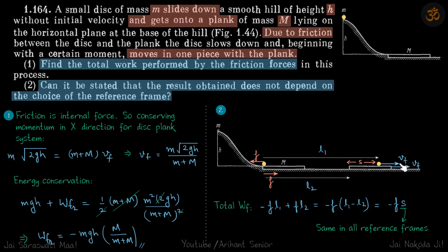So total work done by friction, let's write in terms of l1 and l2 also instead of just calculating its magnitude. So work done by friction on the ball is negative as discussed and its value is the friction F multiplied by the distance travelled. That will be minus F into l1.